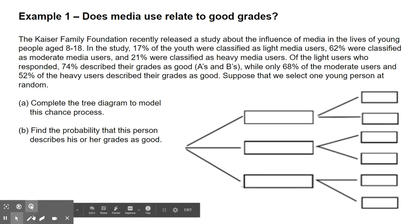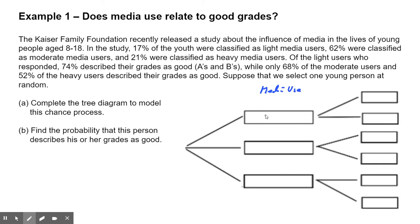So to complete the tree diagram, let's identify the first stage. So the first stage is all about the media use. We have light media use, moderate media use, and heavy media use. So there are 0.17 who describe themselves as light, 0.62 who describe themselves as moderate, and 0.21 who describes themselves as heavy. If you add these three numbers together, 0.17 and 0.62 is 0.79, 0.79 and 0.21 does equal one. So that's good. So that's all of our users, all of our youth broken up.